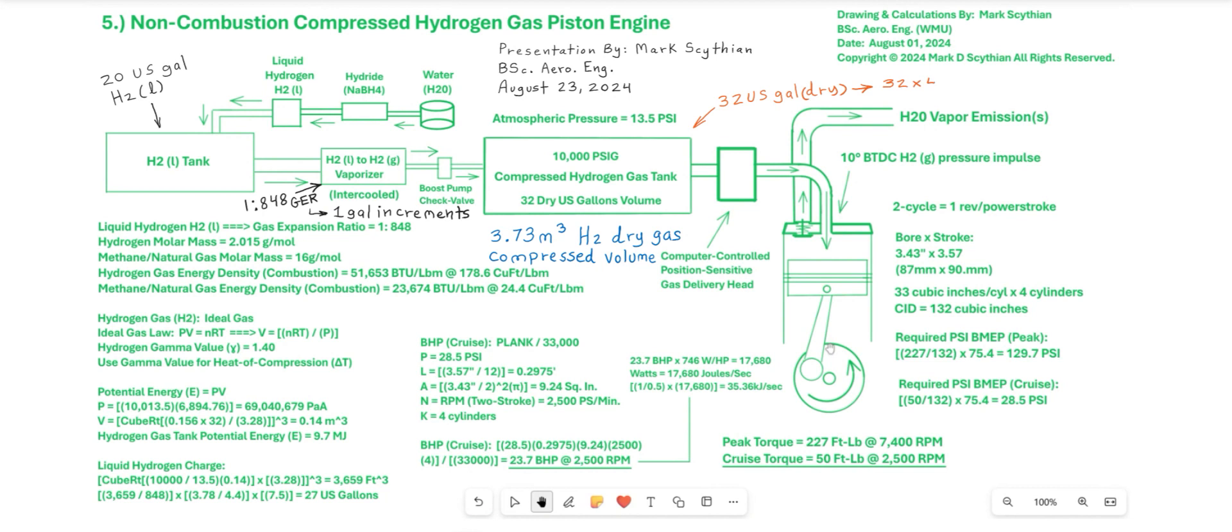So if we focus on 32 U.S. dry gallons of volume and we convert this value into cubic meters, we calculate 0.1408 cubic meters. Using the ideal gas law or the state equation, we can find out what kind of pressure, gauge pressure, compressing 3.73 cubic meters of hydrogen gas into a volume of 0.1408 cubic meters.